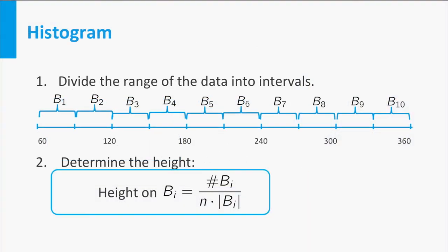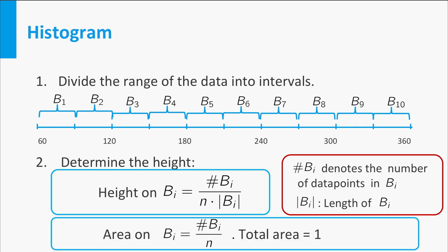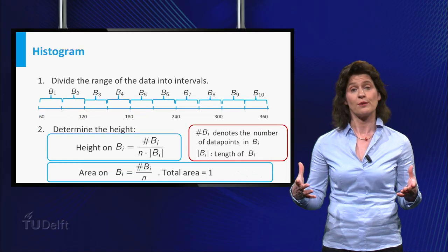This height is obtained by counting the number of observations with values in that interval divided by the total number of observations times the length of the interval. Since the area of the histogram on a certain bin equals the length of the interval times its height, you see that it equals the fraction of data points with values in the interval Bᵢ. As a consequence, the total area under the histogram equals 1.